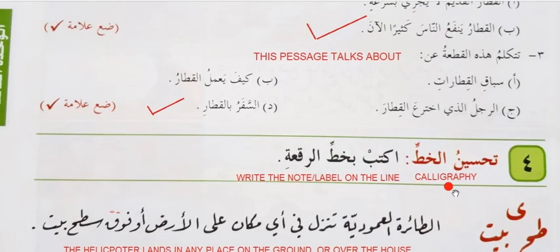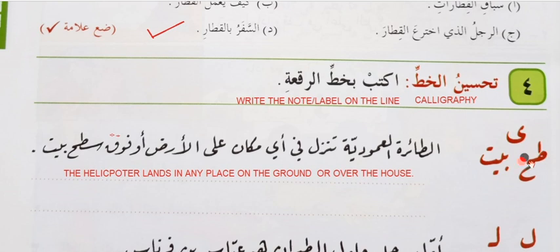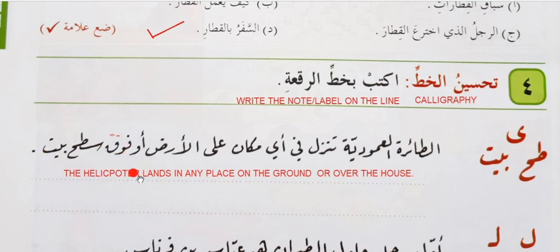Ta-seen ul-khat — calligraphy. Akhtab bi-khat al-ruqa — write in the ruqa script. Akhtab means write, bi-khat means with the line or script. Ruqa means note or label. Al-ta'ira al-amudiya — the helicopter. Tanazul fi ayye makan al-arz — the helicopter lands in any place on the ground, aw fawq bait — or over the house.